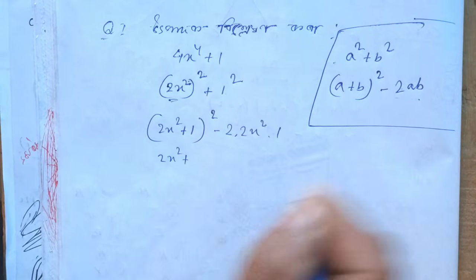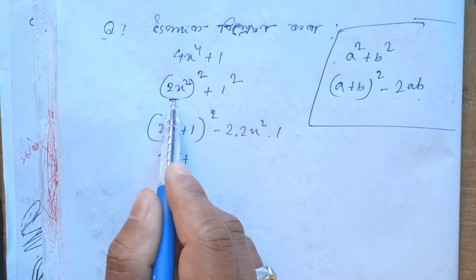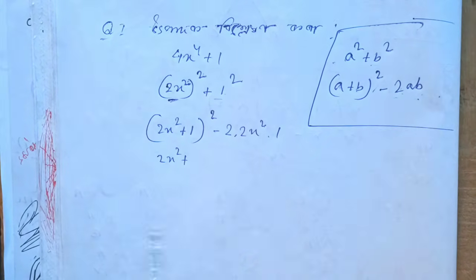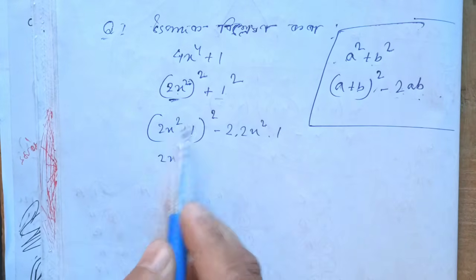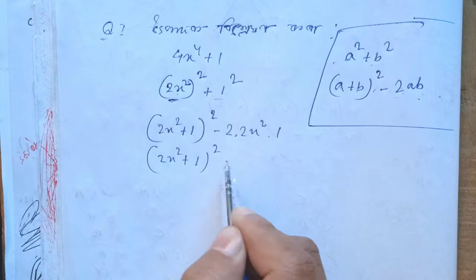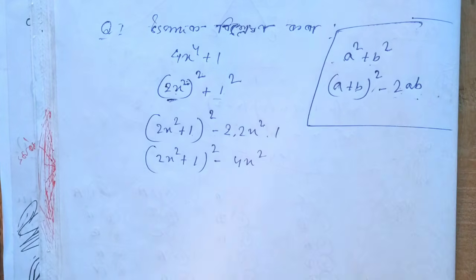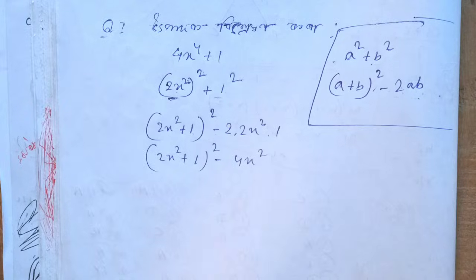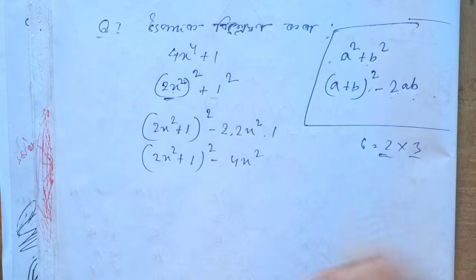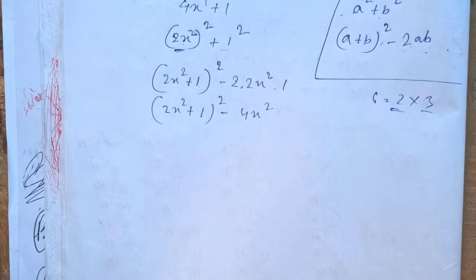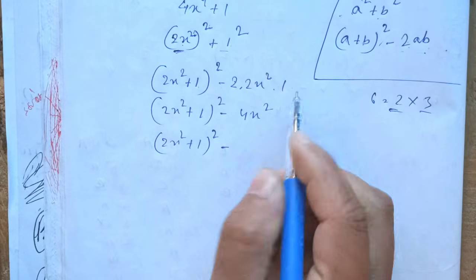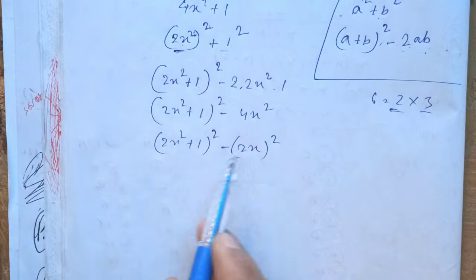So a squared plus b squared equals a plus b whole square minus 2ab. Here a is 2x and b is 1. So we get 2x squared plus 1 whole square minus 2 times 2x times 1, which gives us a squared plus b squared using this formula.